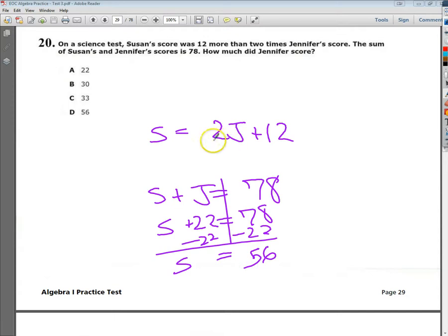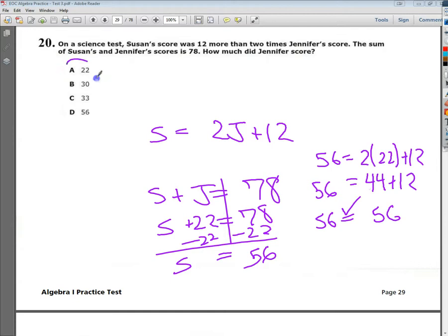So it's 56. I'm just going to make sure it works up here. So 56 is equal to 2 times my guess that it's 22 plus 12. 44 plus 12 does equal 56. So I can say, yeah, it's this one. And you could try plugging in the other ones if it didn't work to get the right answer.